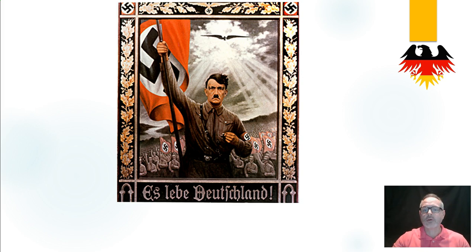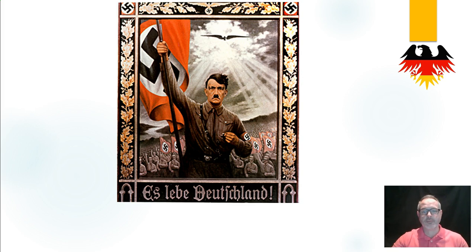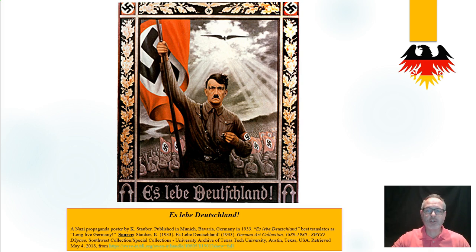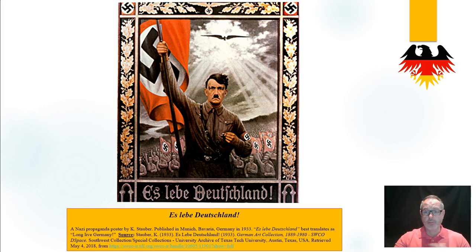Before we progress, make a note in your OneNotes or wherever you're doing this work of what you consider to be the main features of this poster. Hit pause if you need to. I've always said to you let's go to the caption first, and the caption is now displayed for you. Es Lebe Deutschland is a Nazi propaganda poster. Its artist's name is Kay Stauber — we don't know his first name. It was published in Munich, Bavaria in Germany in 1933. Munich, the capital city of the German state of Bavaria, was a hotbed of national socialism. In 1933 we know Hitler becomes Chancellor of Germany, so this is his rise to power.